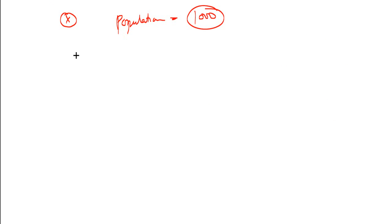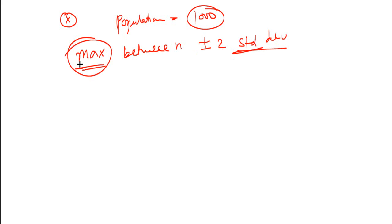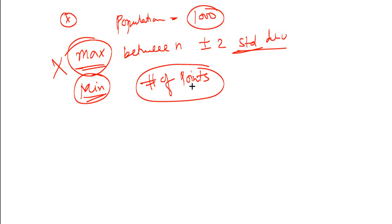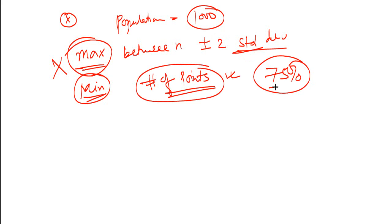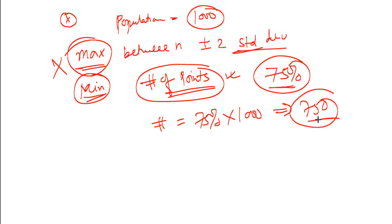Various types of questions come in the CFA and FRM examinations regarding distribution. For example, they may give you a population size of 1000 and ask: what is the minimum number of points between plus/minus 2 standard deviations from the mean? You know that it has to be at least 75%, so the number of points will be 75% of 1000, which is 750. So minimum 750 points will lie between plus/minus 2 standard deviations.